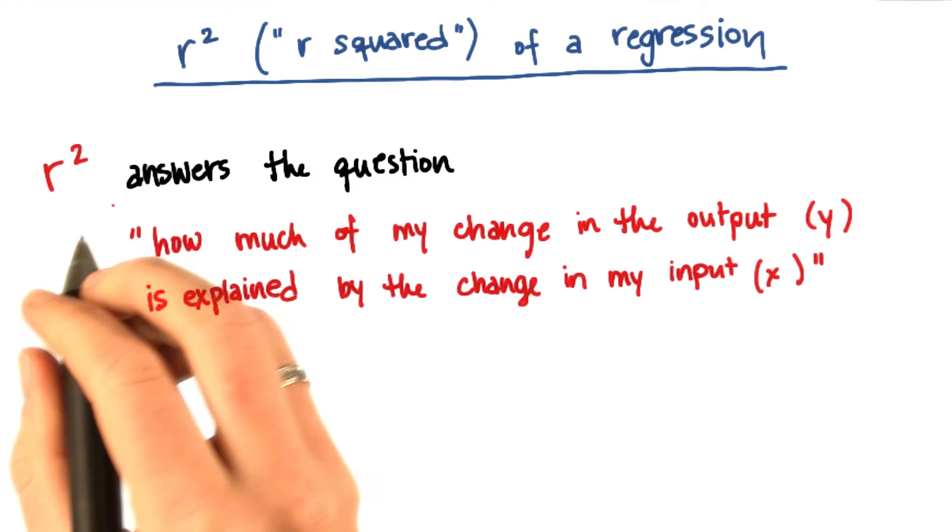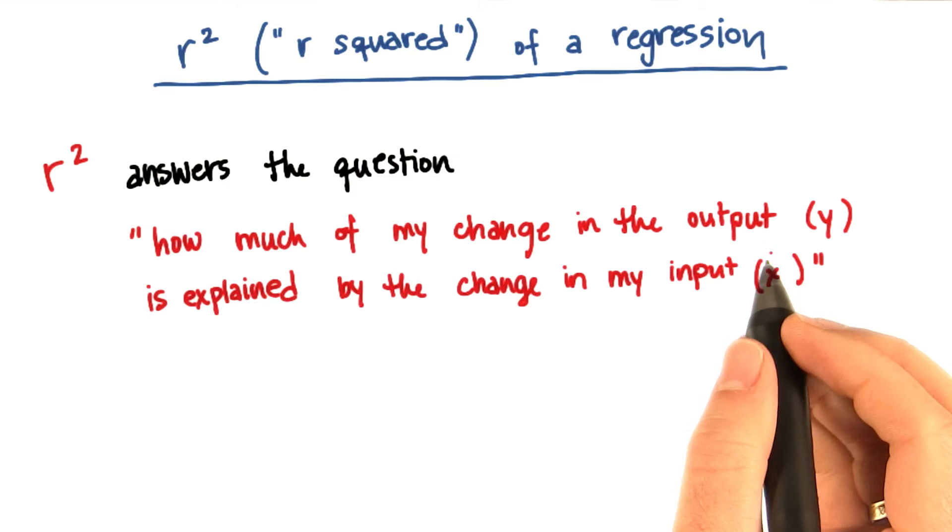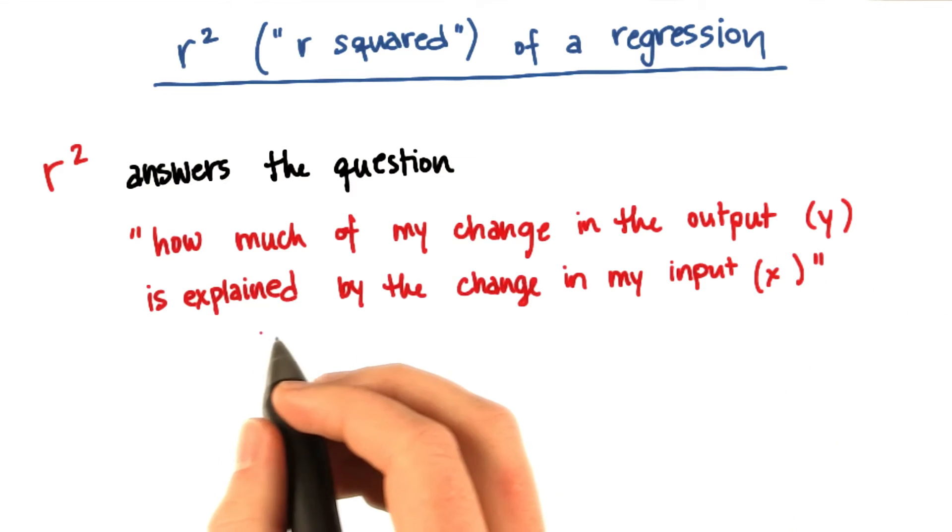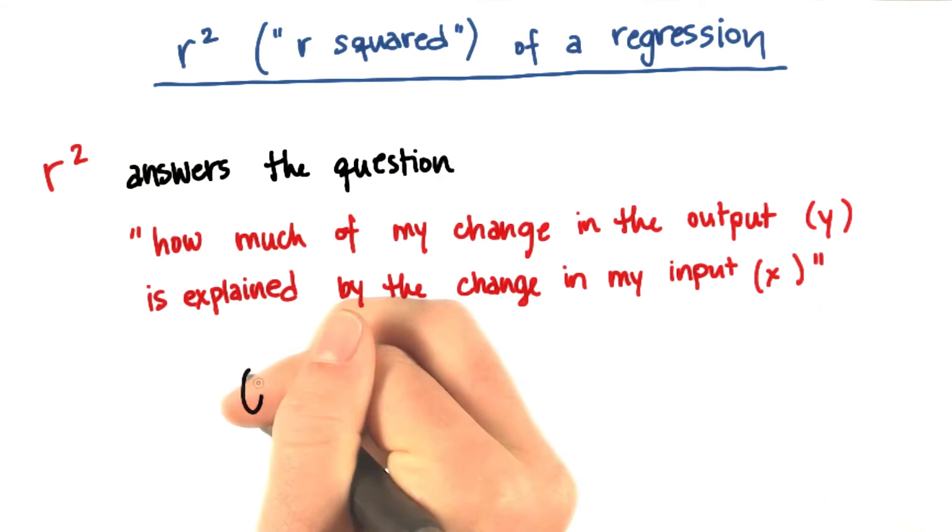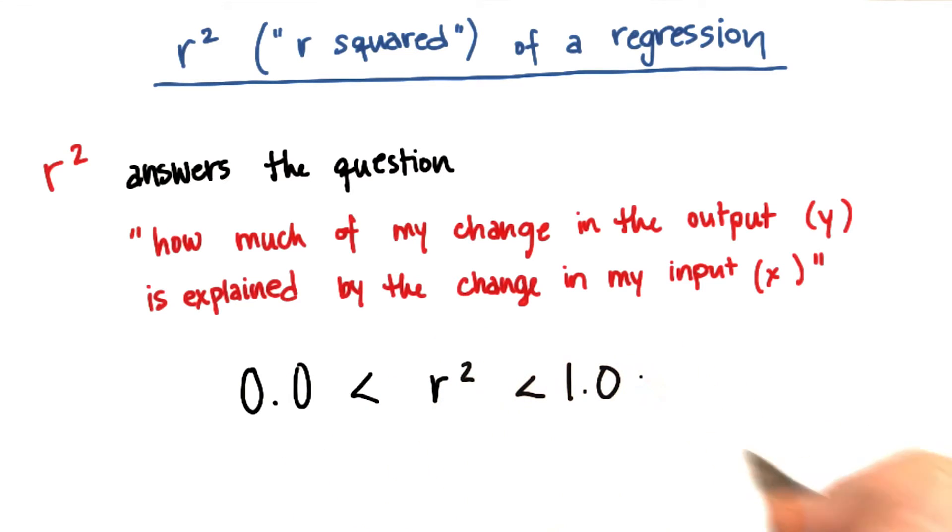What r-squared is, is a number that effectively answers the question: how much of my change in the output is explained by the change in my input? The values that r-squared can take on will be between 0 and 1.